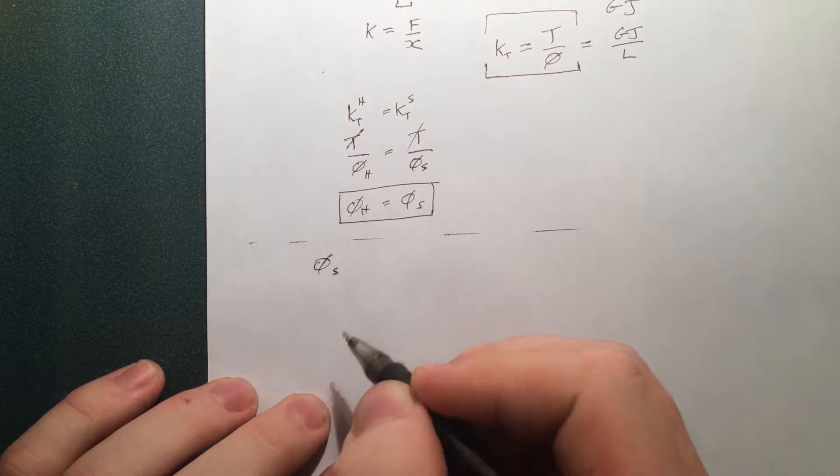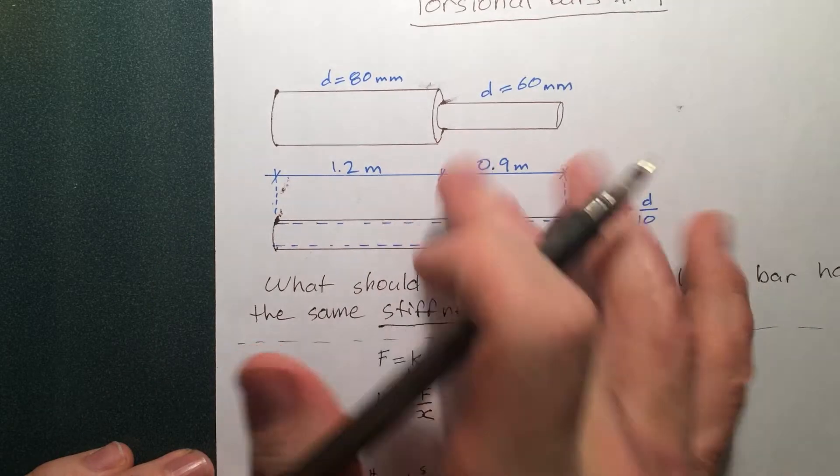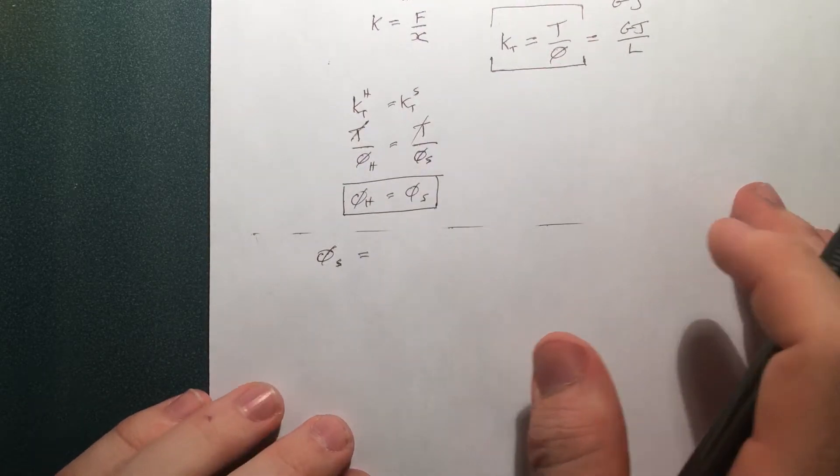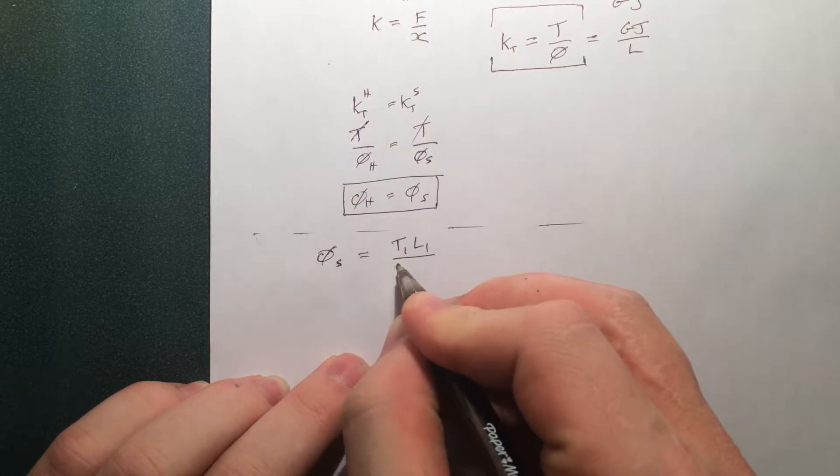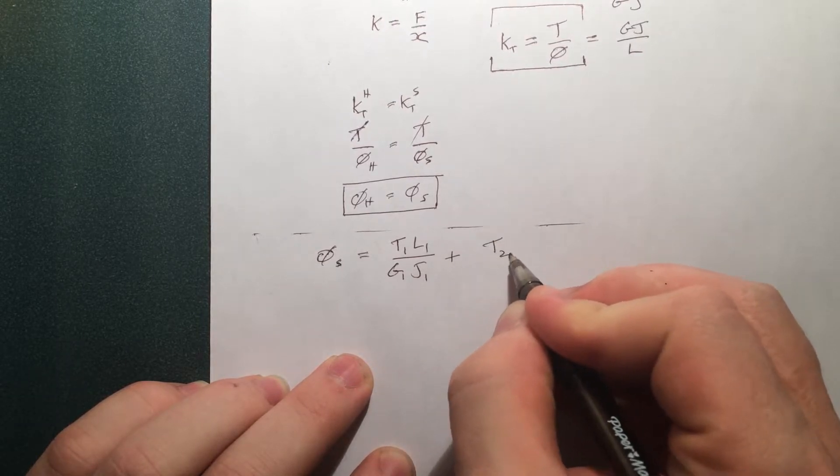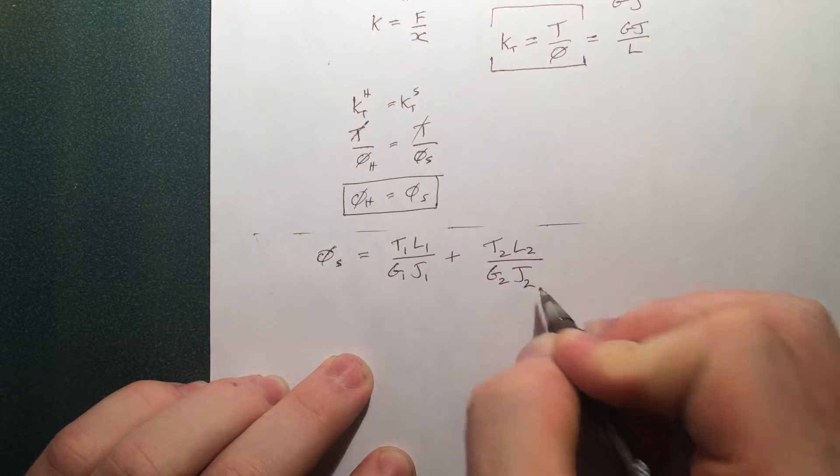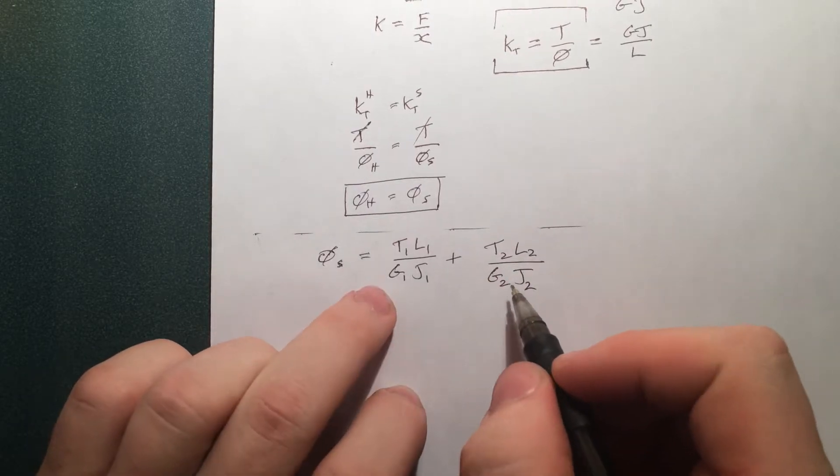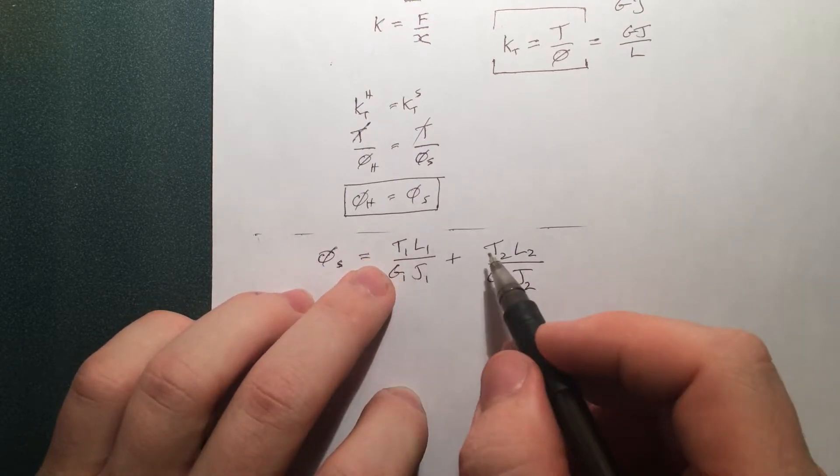So phi of the solid one is equal to the sum of the twist of these two sections. After we applied some arbitrary torque. So it's going to be just like that. Now we already said Gs are the same. The lengths are slightly different. The Js are going to be different. The Ts.